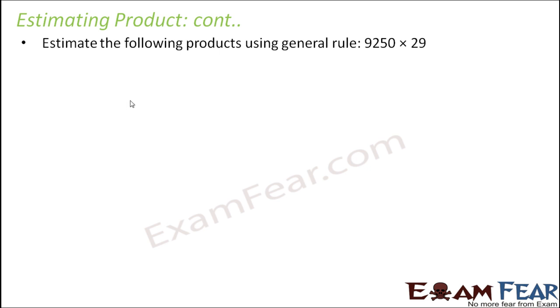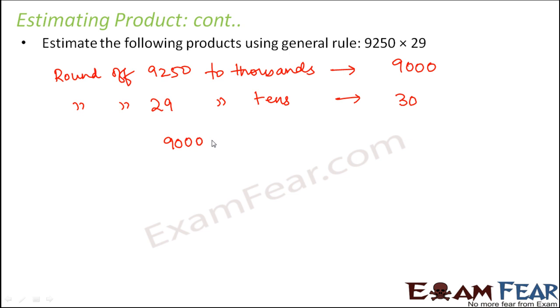Now following this rule, let us try to estimate the following products: 9250 multiplied by 29. In this case, how will we round off each of them? We round off 9250 to its thousands place, so to the nearest thousands. That would make it 9000. Similarly, we will round off 29 to the nearest tens, and that would make it 30. So now when you multiply 9000 into 30, what you get is 9 times 3 is 27, one, two, three, four zeros, so you get 270,000.